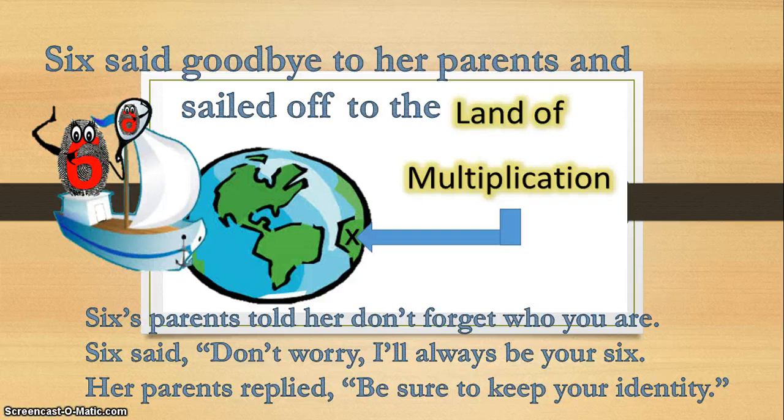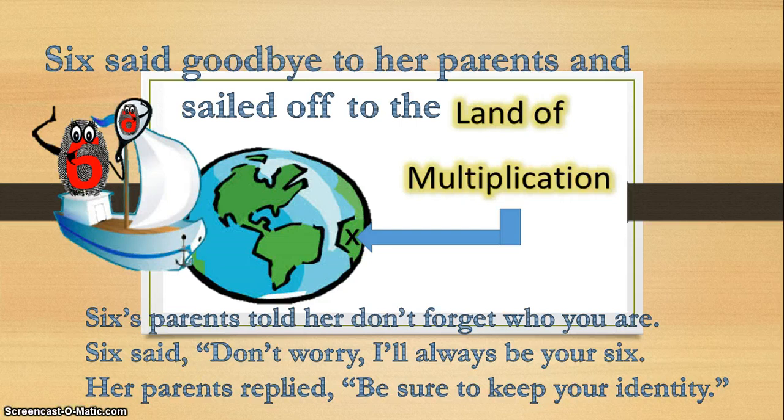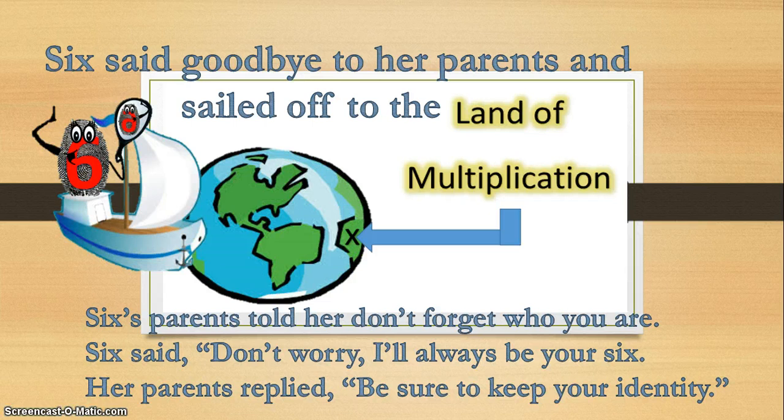Six said goodbye to her parents and sailed off to the land of multiplication. Six's parents told her, 'Don't forget who you are.' Six said, 'Don't worry, I'll always be your Six.' Her parents replied, 'Be sure to keep your identity.'